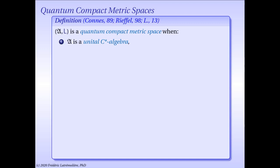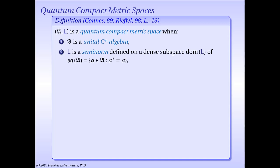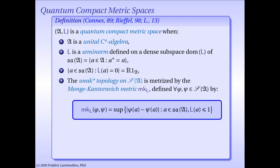As discussed in our previous lecture, we will work on the category of quantum compact metric spaces. A pair (A, L) is a compact quantum metric space when A is a unital C-star algebra, and L is a semi-norm defined on a dense subspace of the self-adjoint part of the C-star algebra A, with the following properties. The zero set of the semi-norm L is exactly the self-adjoint multiples of the unit of the C-star algebra. Most importantly, the weak-star topology on the state space of A is metrized by the Monge-Kantorovich metric induced by the semi-norm L.